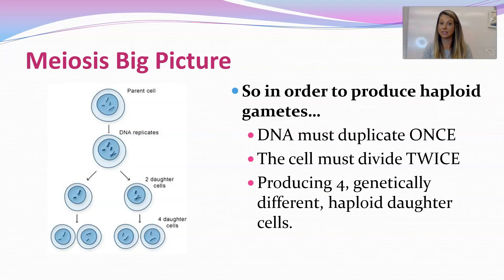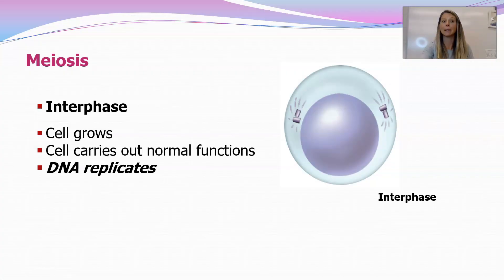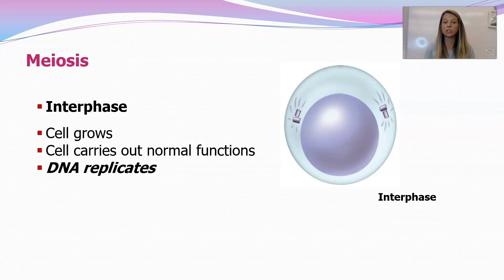In order to produce haploid gametes at the end of meiosis, you have to duplicate the DNA once but divide the cells twice. You duplicate the DNA once before cell division, then go through two meiosis cycles, which means you end up with four genetically different haploid daughter cells — very different from mitosis. Interphase of the meiosis cell cycle is similar to interphase in mitosis: the cell is growing, carrying out normal functions, and the DNA is replicating. The big difference is that this happens in germ cells, which are your reproductive cells that will eventually become sperm and egg.